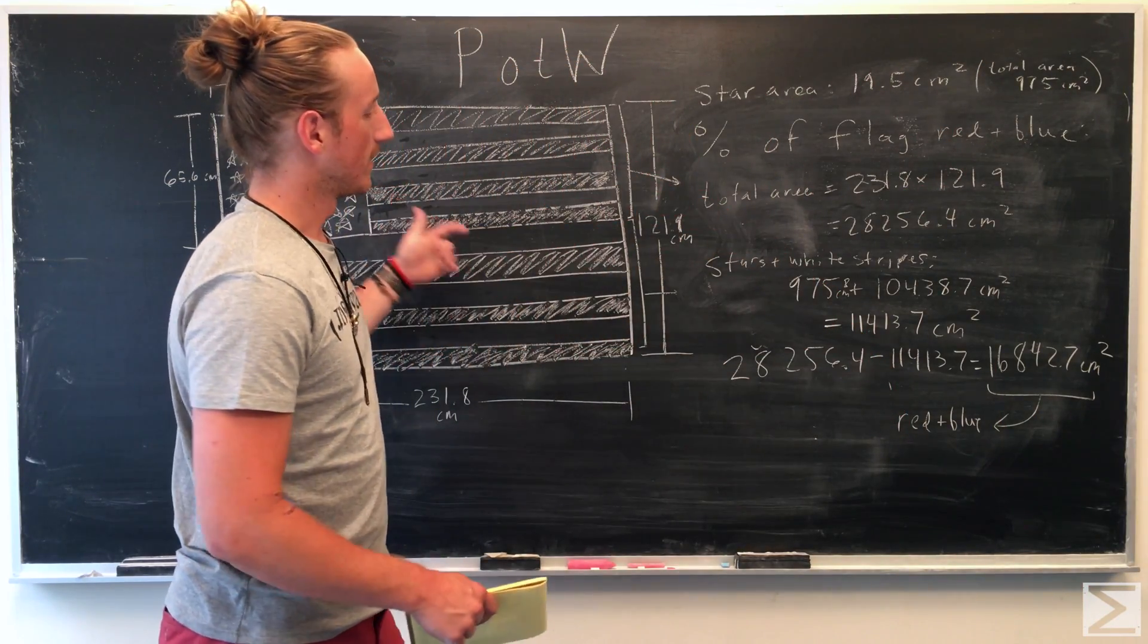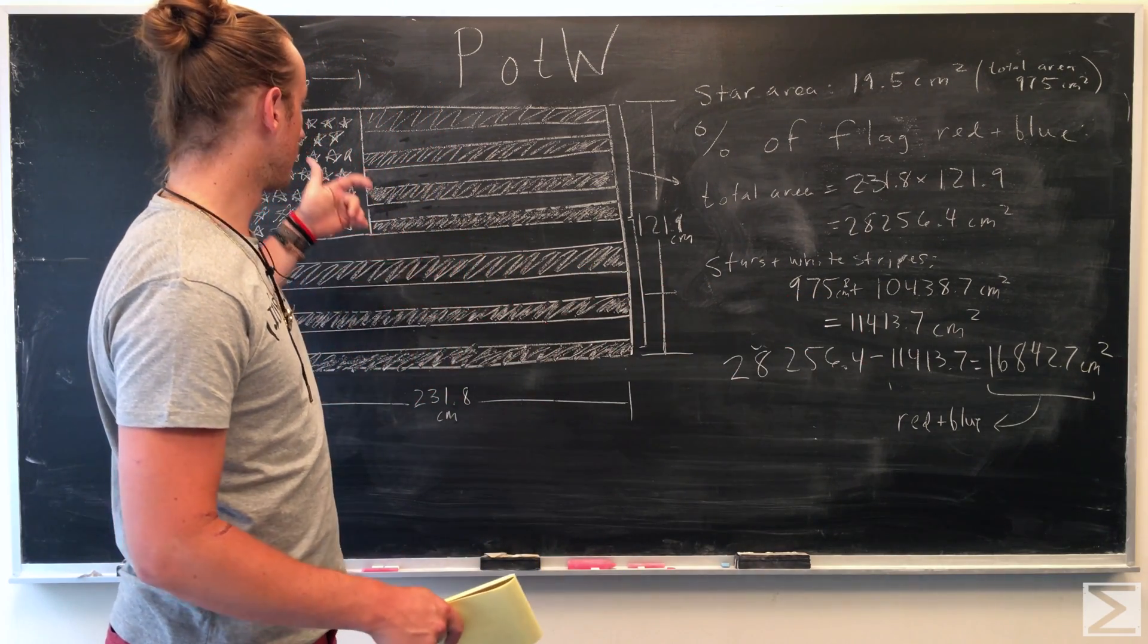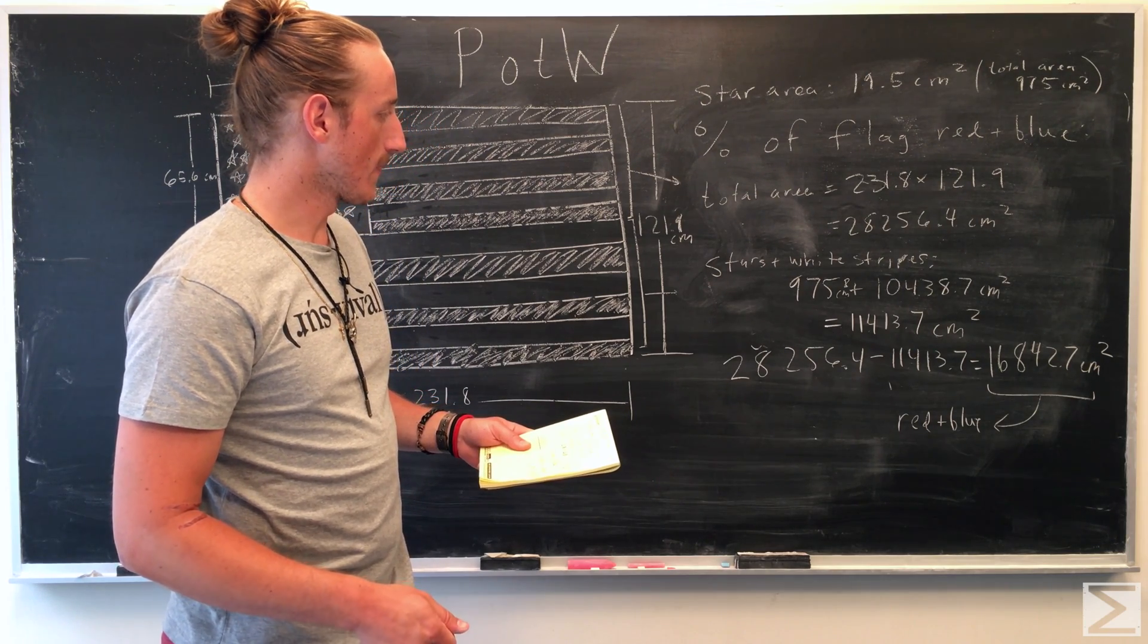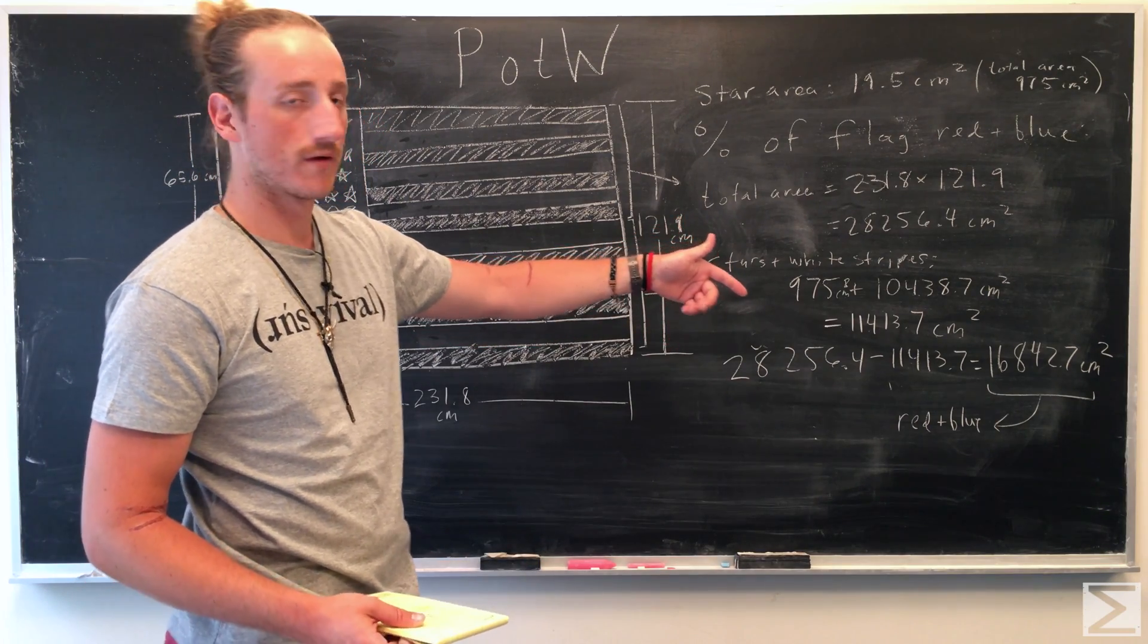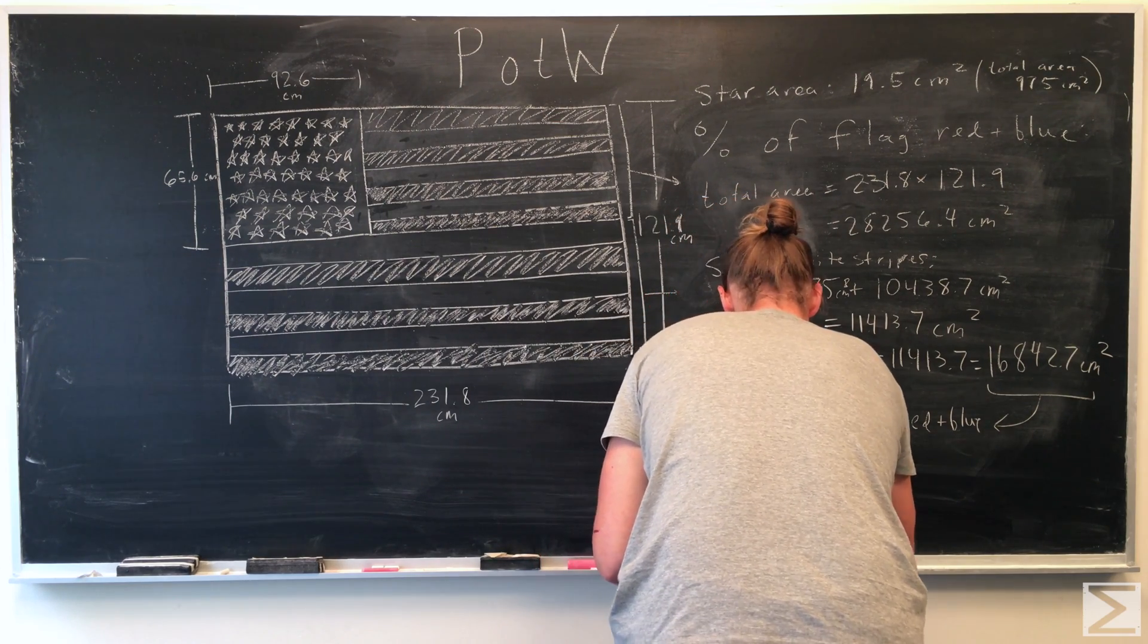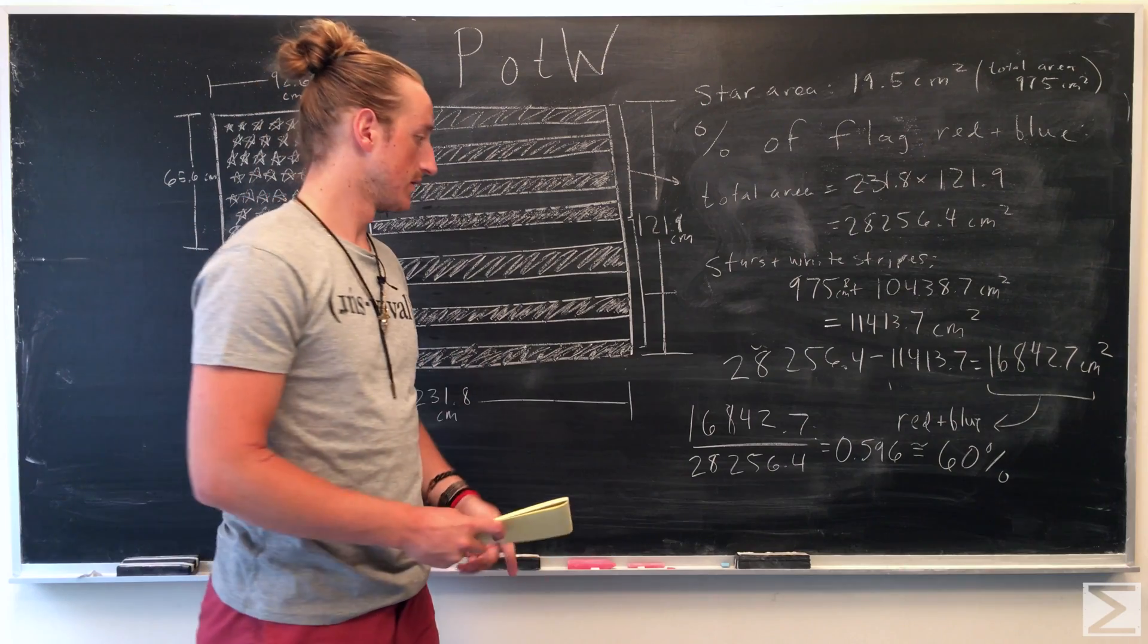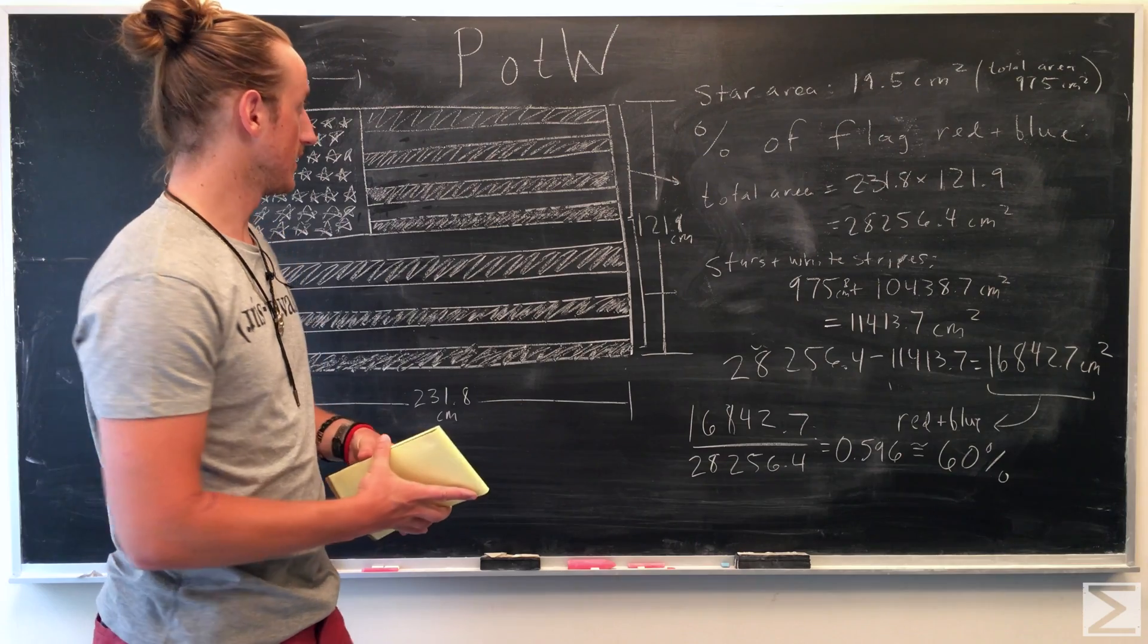Through these calculations, we found out that 16842.7 centimeters squared of the flag is red and blue. The stripes and then everything behind the stars, which we found out. We just look at the ratio of the red and blue all over the entire flag. Through these calculations, we found that about 60% of the American flag is not white. It is red or blue.